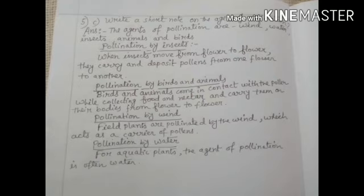Write a short note on the agents of pollination. Answer: The agents of pollination are wind, water, insects, animals, and birds. Pollination by insects: When insects move from flower to flower, they carry and deposit pollens from one flower to another.